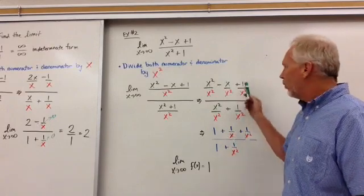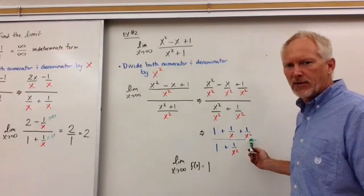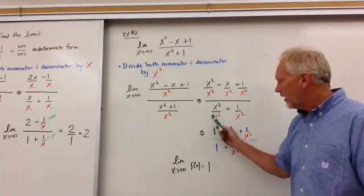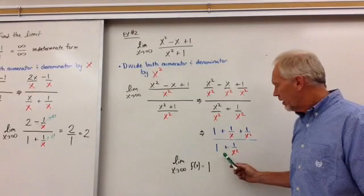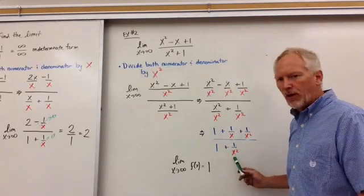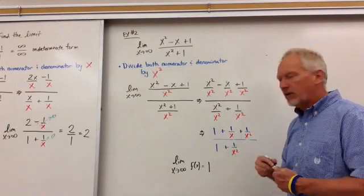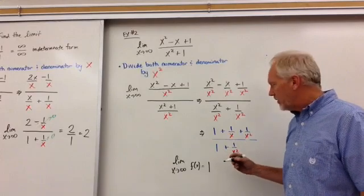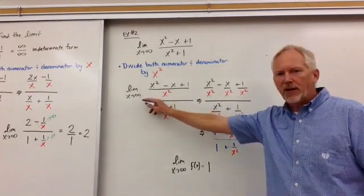This becomes 1 over x squared, or x, and 1 over x squared remains. In the denominator, again, x squared over x squared is 1 plus 1 over x squared.